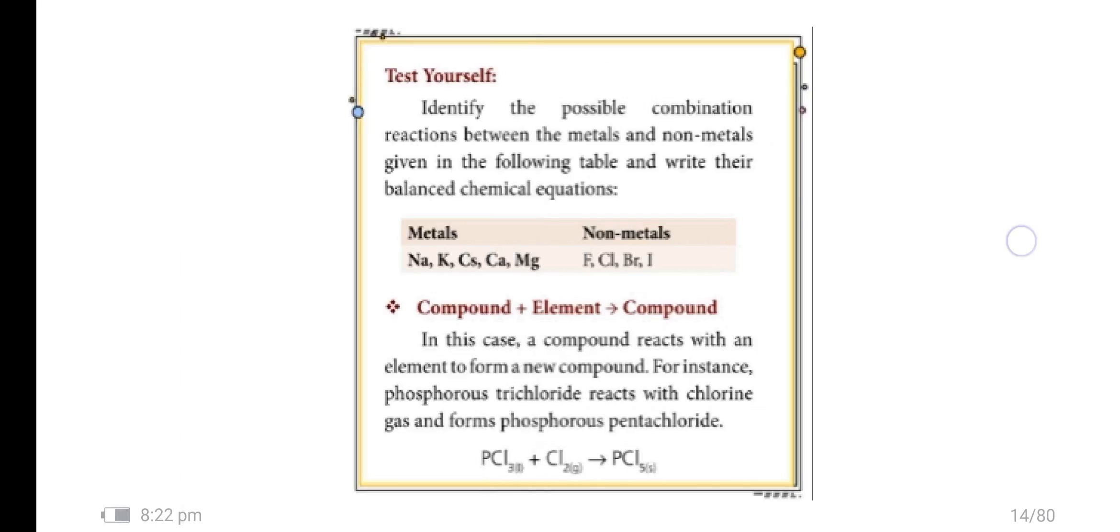Test yourself. Identify the possible combination reactions between metal and non-metal given in the following table and write their balanced chemical equation. Metals: sodium, potassium, calcium, magnesium. Non-metals: fluorine, chlorine, bromine, iodine.